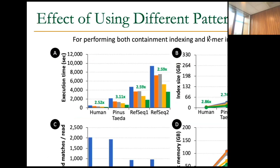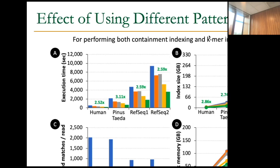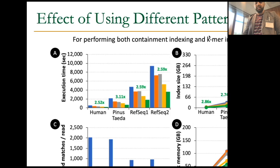We also show results varying the pattern used. A 1-1 pattern means no sparsification at all. Other patterns remove one character every four, one every three, one every two, or two every three characters. You can see how linearly execution time scales with the pattern change, across different sizes of reference genome. The index size also scales very well with the chosen pattern. However, when you sparsify the data, you reduce the number of seeds collected, which affects the number of seed matches — so you need to lower your thresholds to maintain correctness depending on your application.